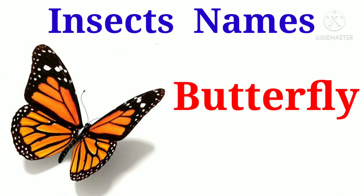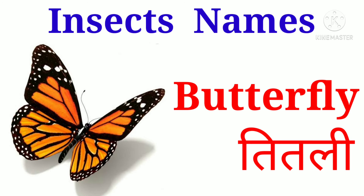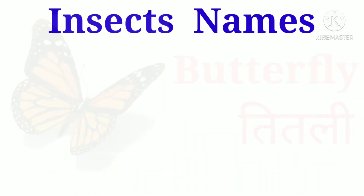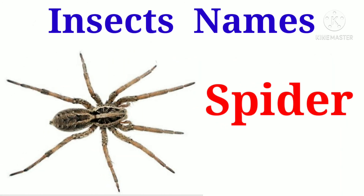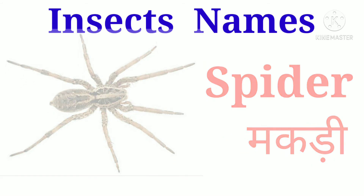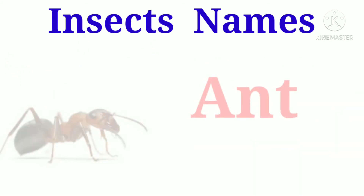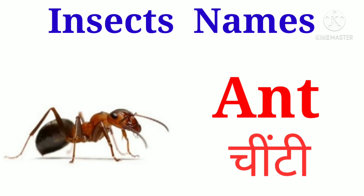Firefly. Firefly ko Hindi me hum jugnu kehte hain. Butterfly. Butterfly ko Hindi me hum titali kehte hain. Spider. Spider ko Hindi me hum makdi kehte hain. Ant. Ant ko Hindi me hum chiti kehte hain.